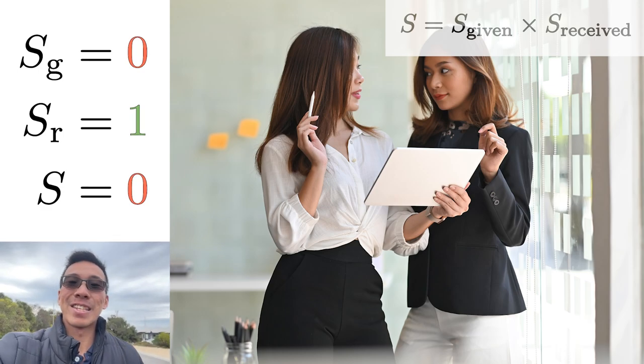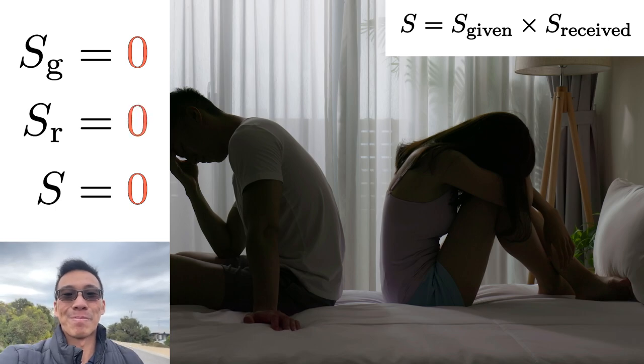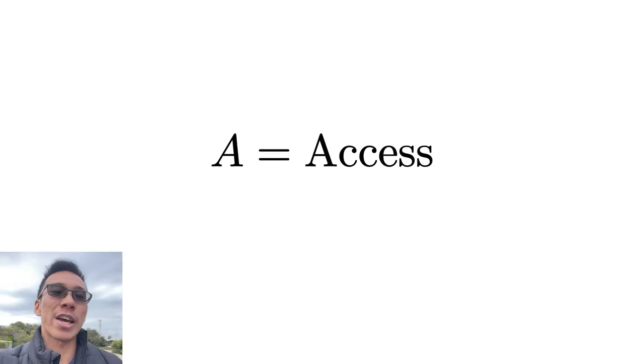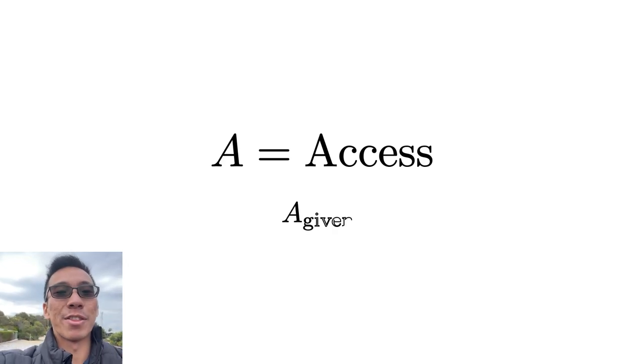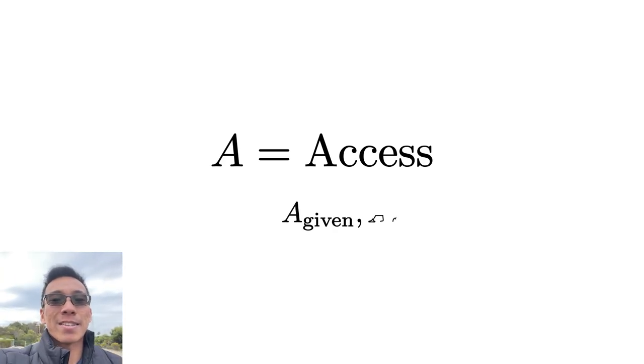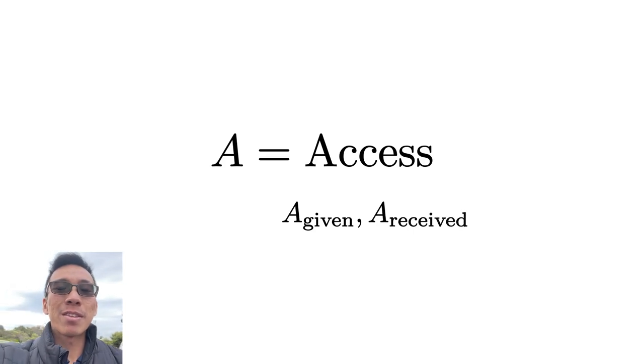This brings us to the next term which is given by A. A is an abbreviation for the notion of access. Access refers to how much you share about your life to the other person—that is the access that you give to the other person. Access that you receive from the other person is the amount of their life that they are willing to open up to you.